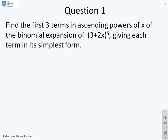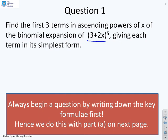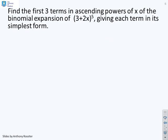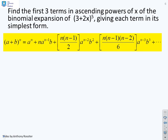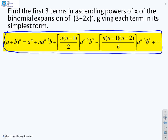Question 1: find the first three terms in ascending powers of X of the binomial expansion of 3 plus 2X to the power of 5, giving each term in its simplest form. Always begin by writing down the key formula first. There's the question, and here is the general expression for a binomial expansion written down before we start.